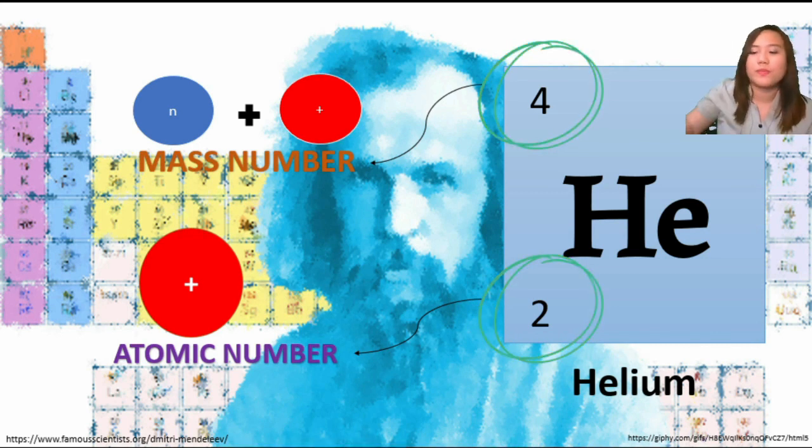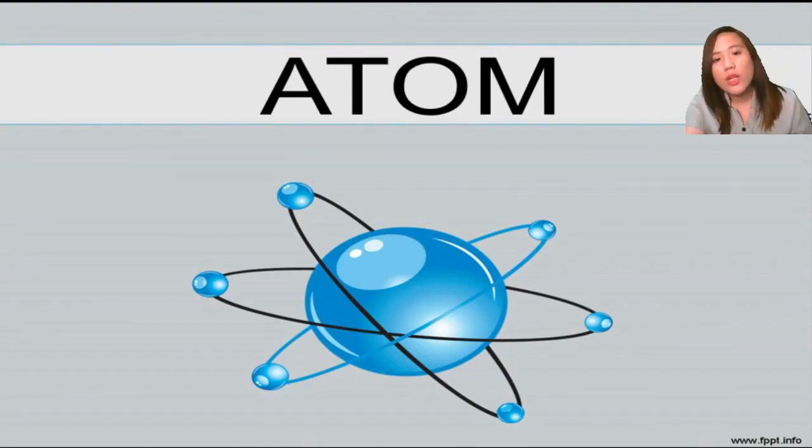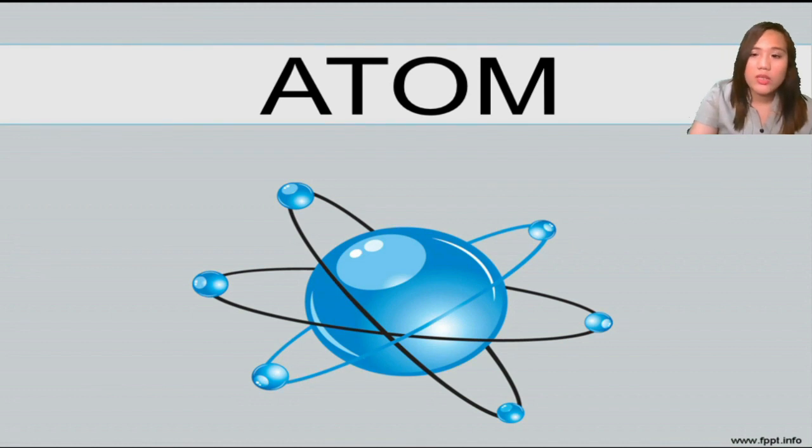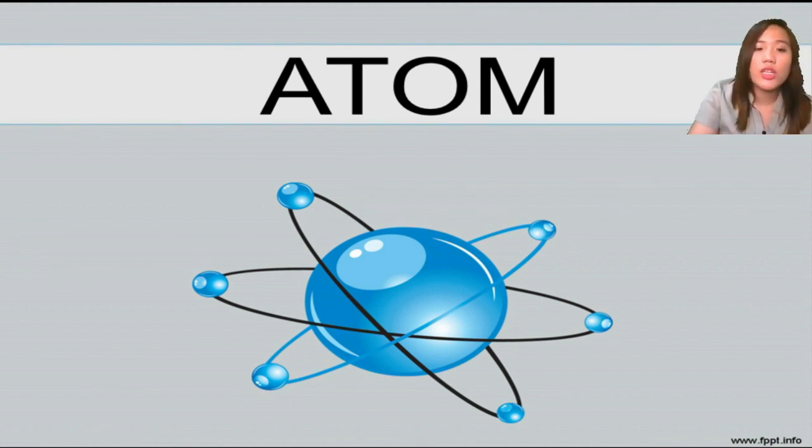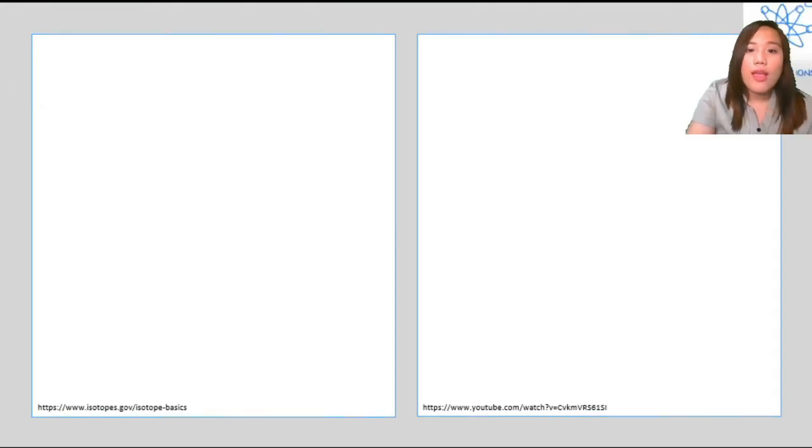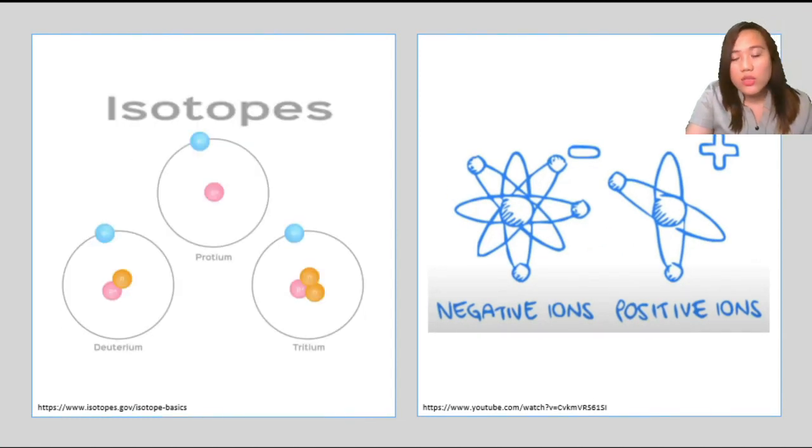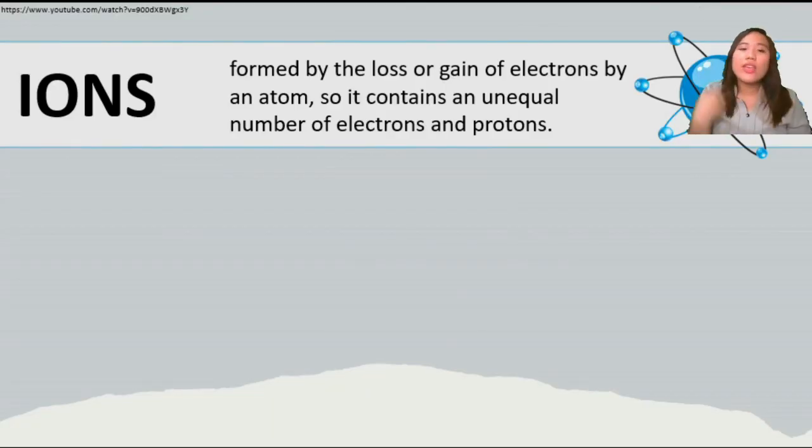Since you are now familiar with the subatomic particles—electrons, the negative charge; protons, the positive charge; and neutrons, the neutral charge—we will now talk about ions and isotopes. Don't worry, because they are still atoms. They just had changes, either in the electrons or in the neutrons.